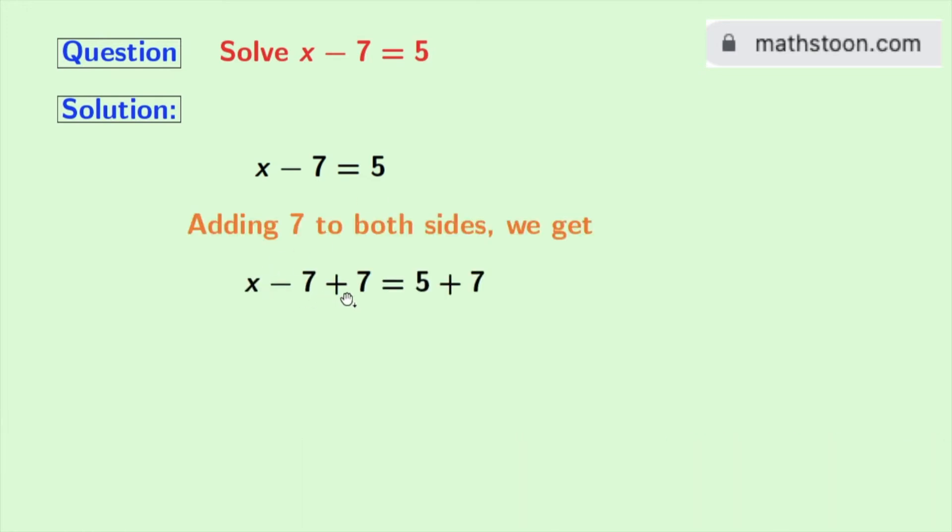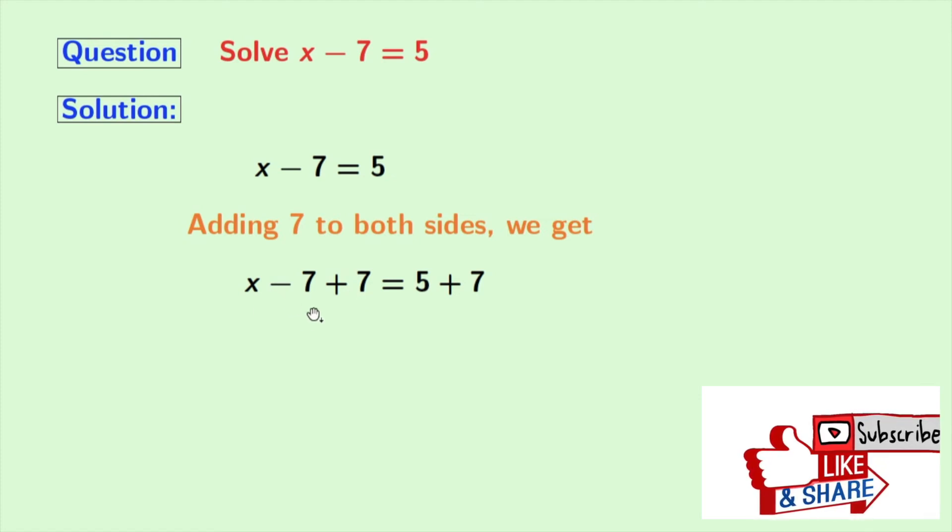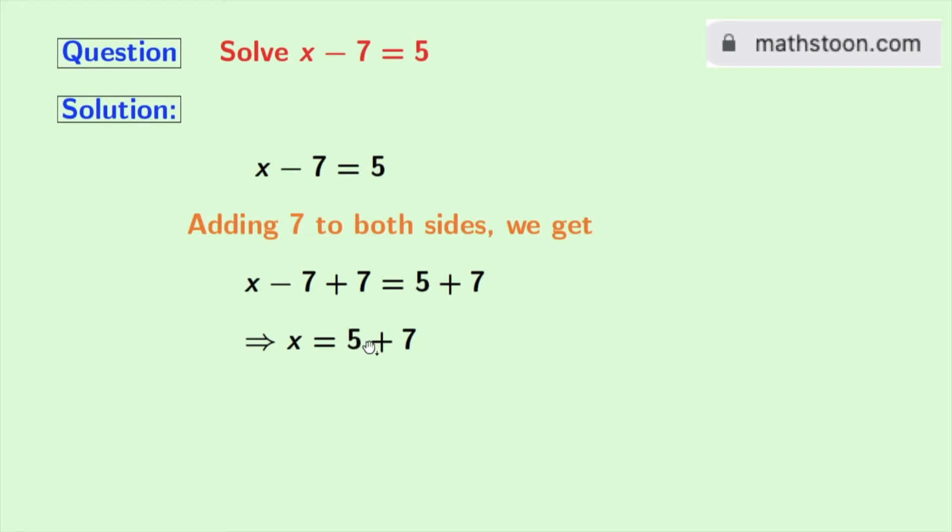Now look at minus 7 and plus 7 is 0, so in the left-hand side we get x, and in the right-hand side we get 5 plus 7, which is equal to 12. So finally we get x is equal to 12, and this is our final answer.